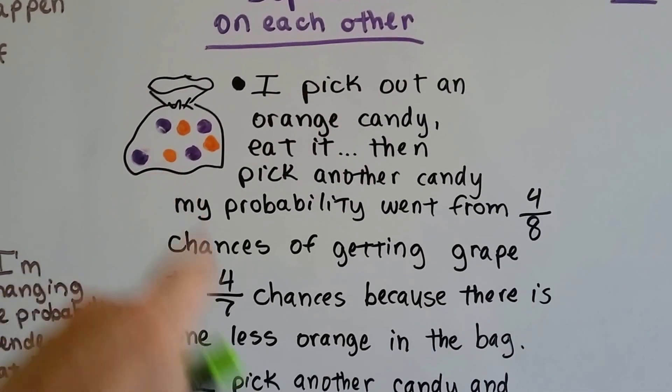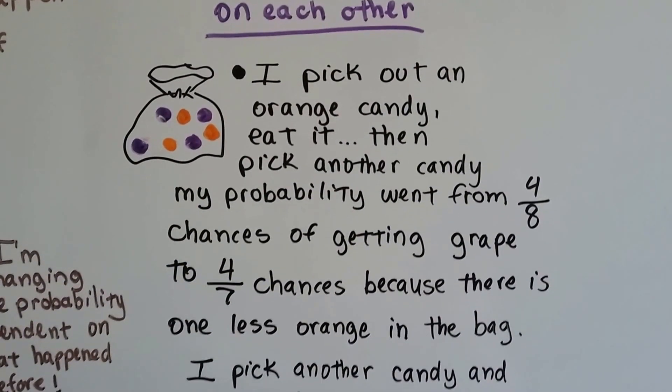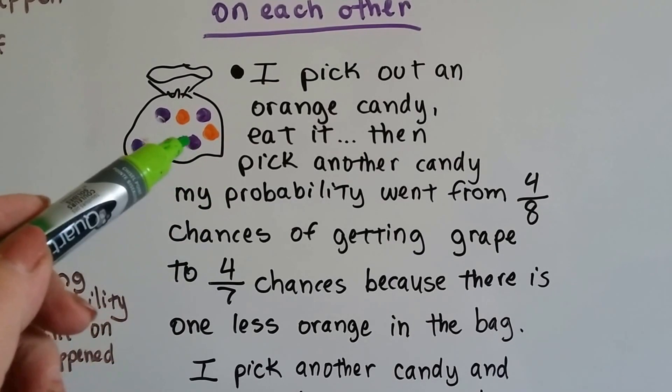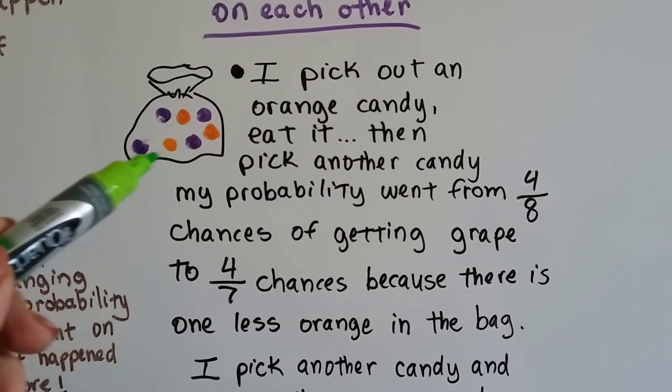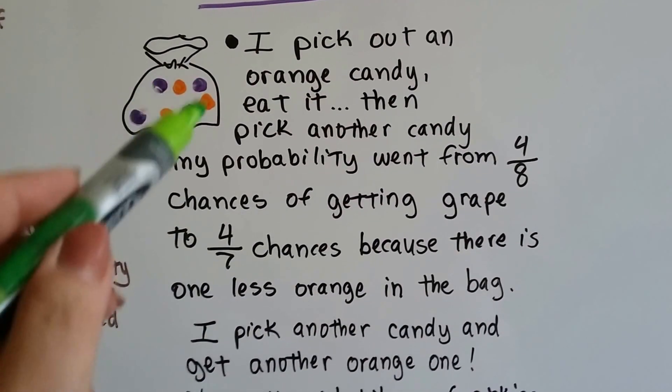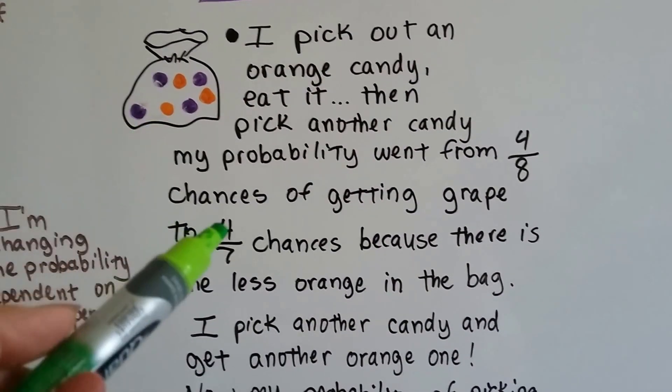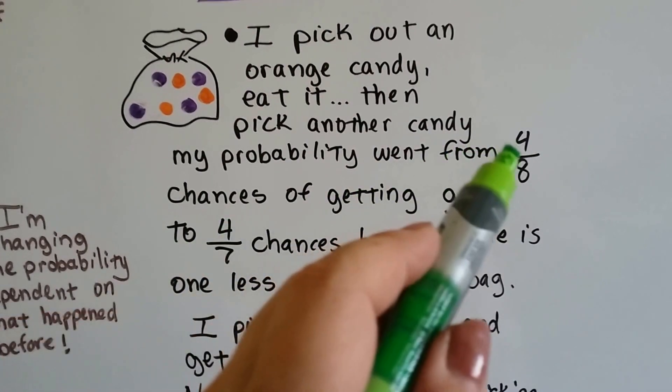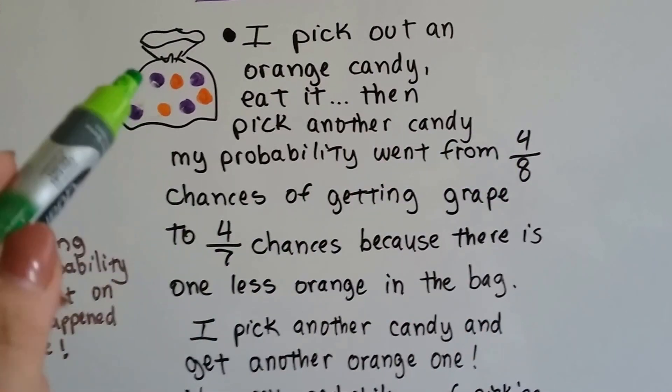Now there's three orange and four grape candies. My probability went from four out of eight chances of getting grape to now it's four out of seven chances of getting grape, because now there's only seven candies in there. And this is dependent on what I did before. See? Because I didn't put the candy back.